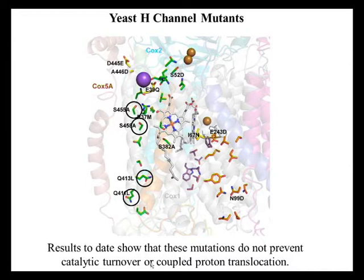We've taken each of these residues, mutated them, and looked at the effects on proton movements in the enzyme. The bottom line — which is what I talk about in my presentation at the meeting — is that the results to date show that these mutations do not prevent catalytic turnover or the coupled proton translocation in these mitochondrial enzymes. Our conclusion at the present time is that the H channel, as is the case in bacterial enzymes, is not the proton translocating channel, and that probably all these enzymes are working by the same mechanism of the D channel doing the proton translocation.